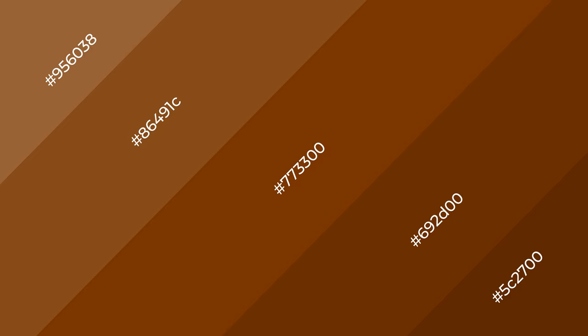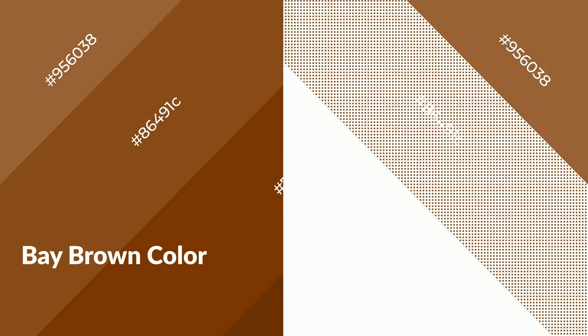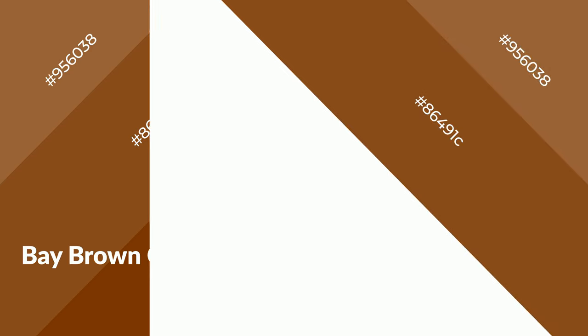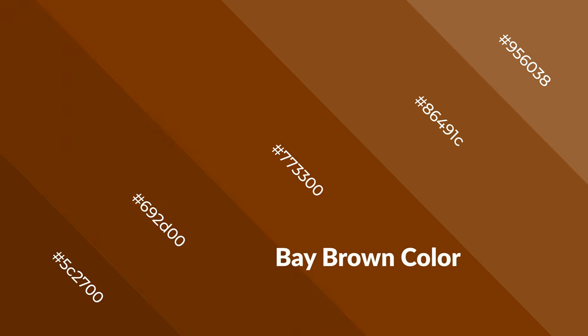Shades create depth and drama. Bay brown is a warm color and it emits cozier and active emotions. Warm colors are symbols of warmth, fire, heat, and sunshine. It also evokes joy, passion, love, and even anger emotions. You can see them used in restaurants and gyms.